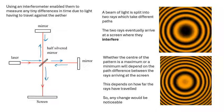Okay, now the beam of light is split into two rays which take different paths. The two rays eventually arrive at the screen where they interfere. Now when they interfere, in the middle of the pattern, do you get a maximum or do you get a minimum?